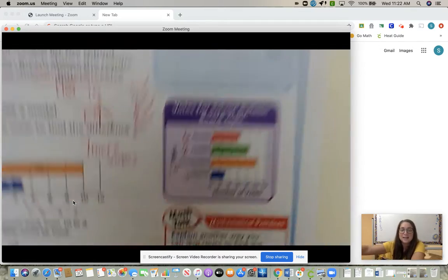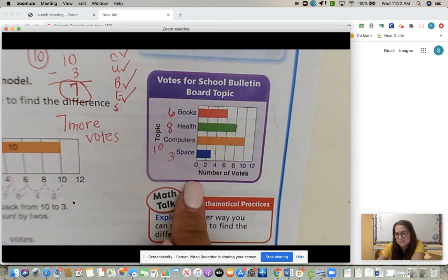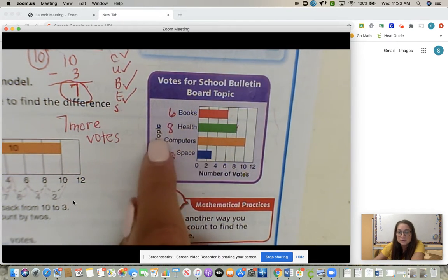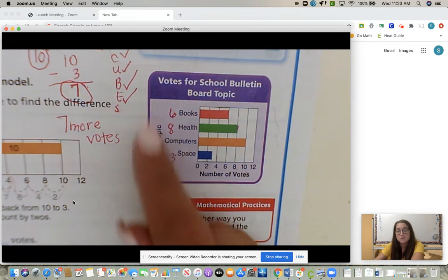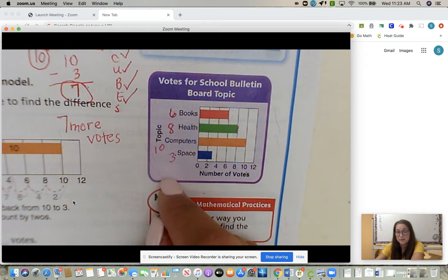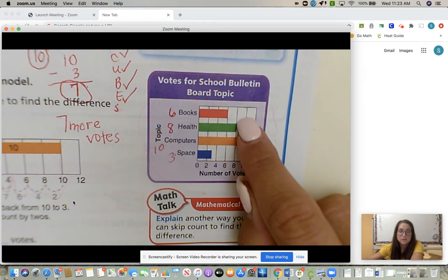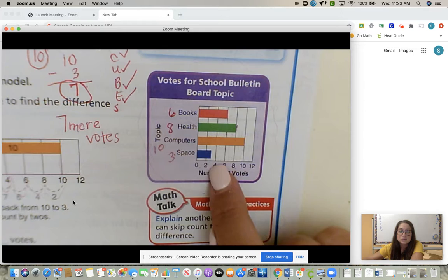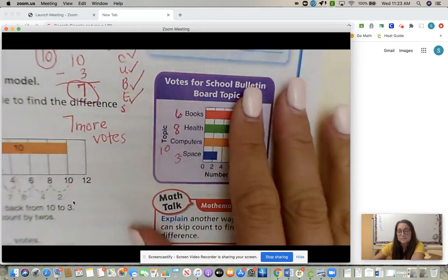To start off, I always like for students to write the numbers, no matter what graph it is, unless it's a frequency chart. A student asked me why, and the reason is when you already find out how much each is worth, then when you go to your questions, it will go super quick because you already have a lot of the answers already written. So for books, we have six. Health, there's eight. Computers, ten. Space is three because we are skip counting by twos.